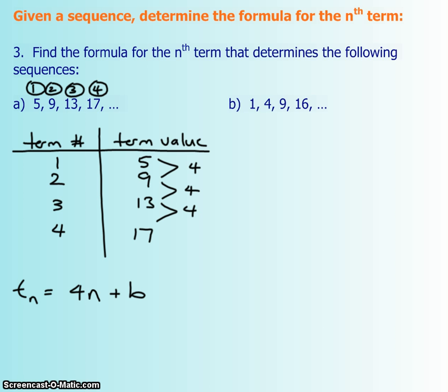This is what you do next. You kind of check. If I took my term number and I put it in here, that's 4 times 1. It should equal to my term value of 5. But 4 times 1 does not equal to 5. So b has to be a positive 1 at the back in order to make that statement true.